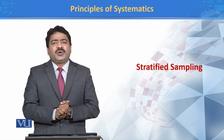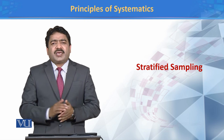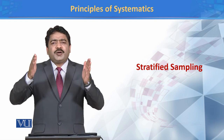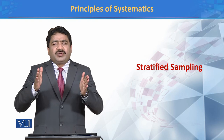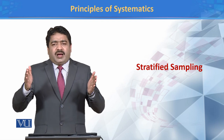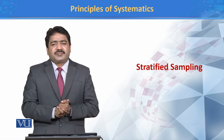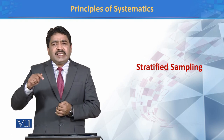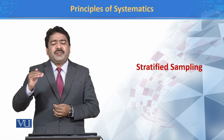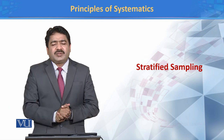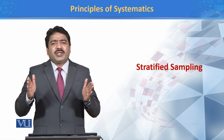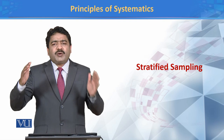एक और example अगर हम देखें: हम ये मालूम करना चाहते हैं कि जो insects हैं, उनकी जो distribution है वो plants पर कैसी है. हम plant को divide कर لیتے ہیں on the basis of height. 1 centimeter से 5 centimeter की height पर जो insects हैं उनका एक group बना लिया, 6 से 10 centimeter तक का एक और group, और 11 से above جو height पر insects मौجود हैं उनका एक अलग group. तो height की base پر ہم نے plant کو different strata میں divide کر لیا.